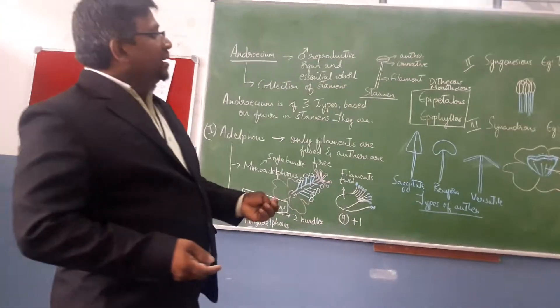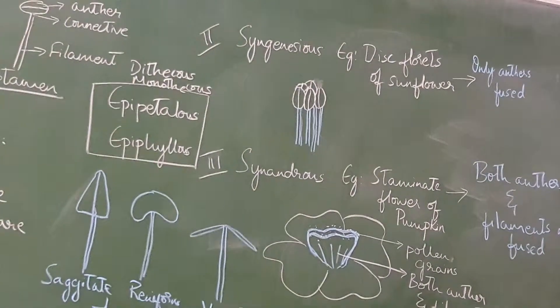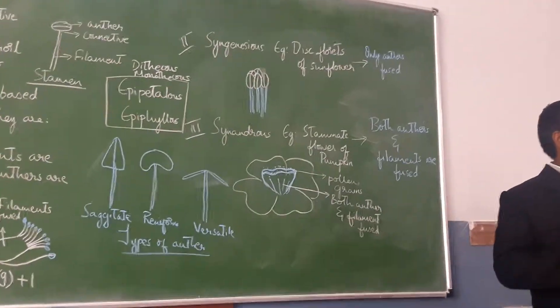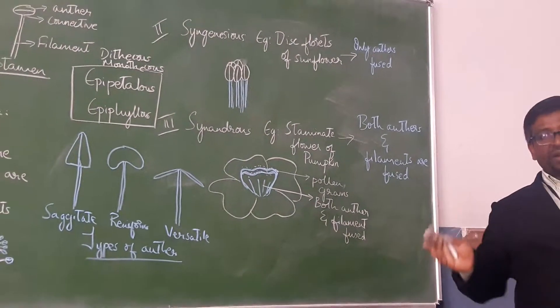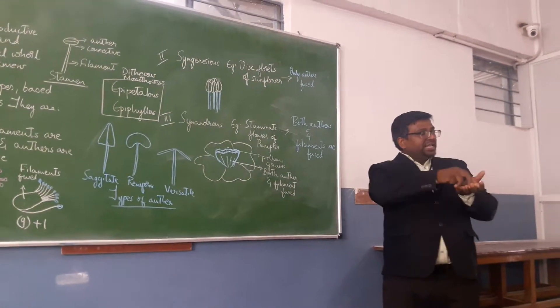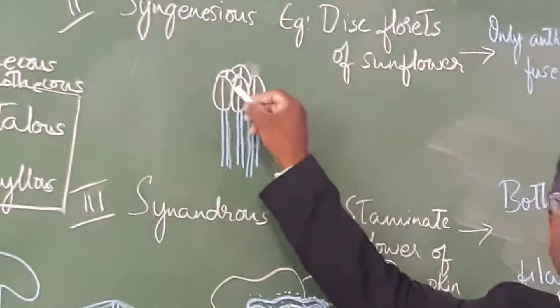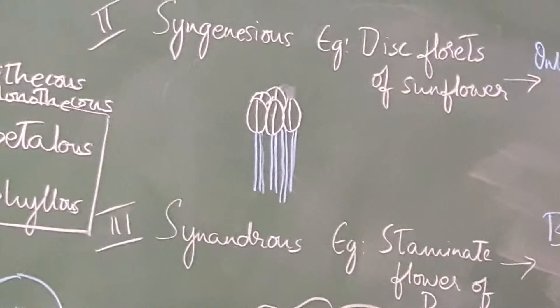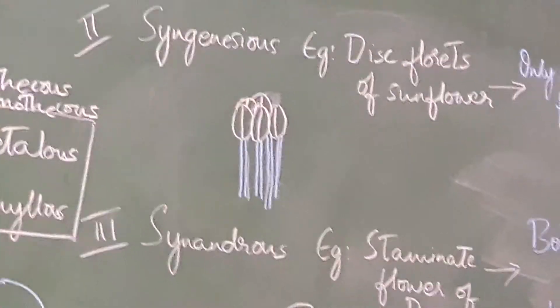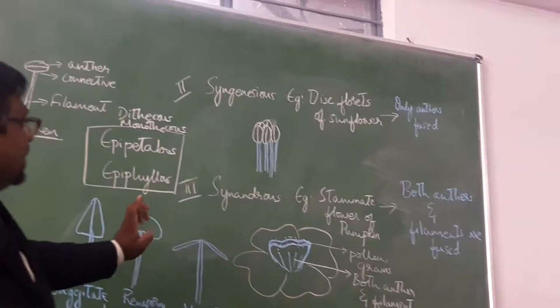The second type of fusion is syngenesious, where only the anthers are fused and the filaments are free. An example is the disc florets of sunflower. Sunflower is an inflorescence — the external part is ray florets and the central part is disc florets. In disc florets, 5 stamens are present with only the anther lobes fused while filaments are free.